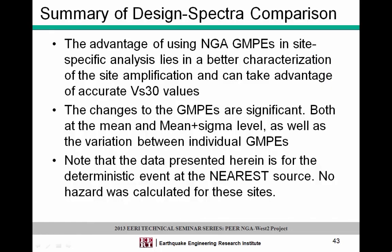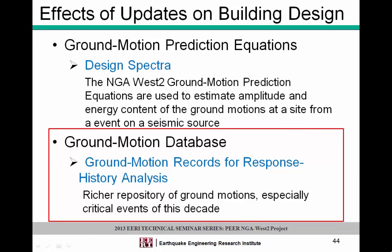Putting it all together, the ground motion prediction equations from NGA West 1 and 2 are definitely a step forward for building design and performance-based design — providing better assessment of hazard and risk at your site. The changes are significant in the period range of interest for typical building sites and frequencies. Keep in mind this has been a qualitative approach looking at the deterministic spectrum for the nearest source, but there is definitely significant change in the periods of interest.